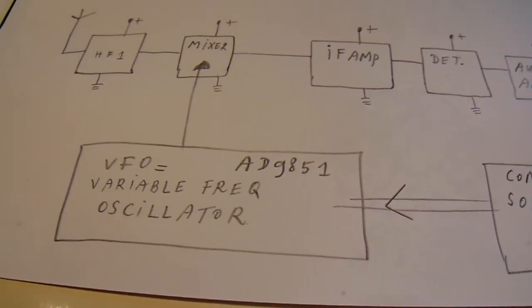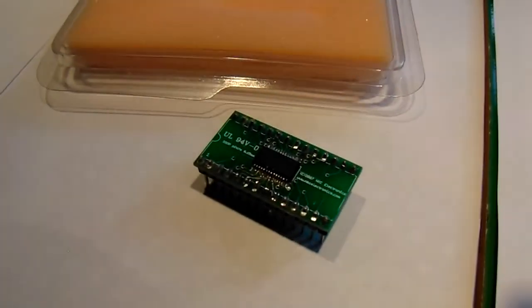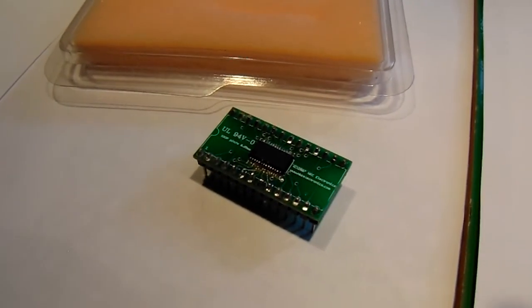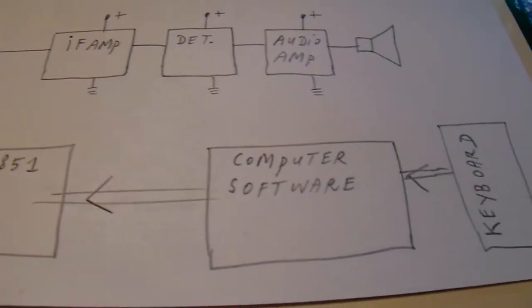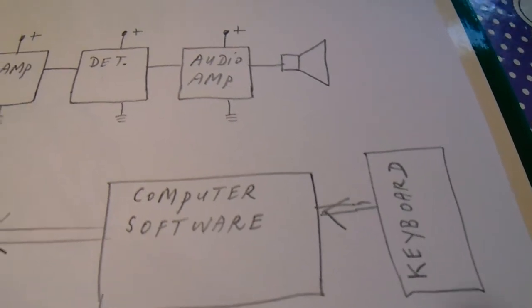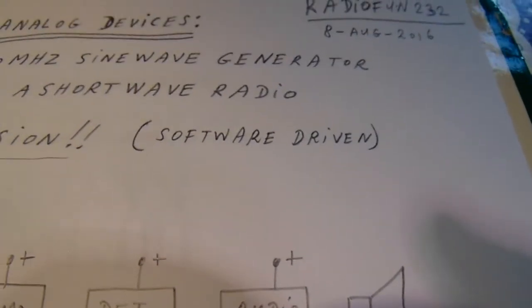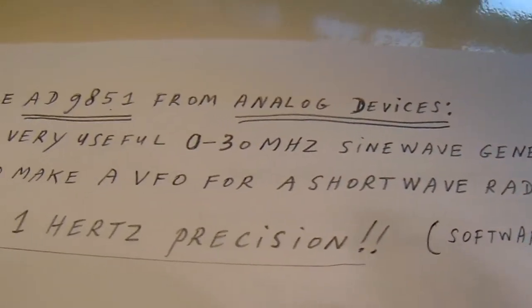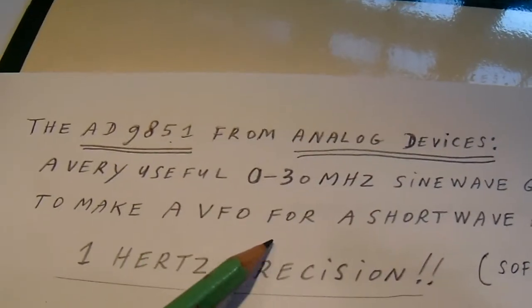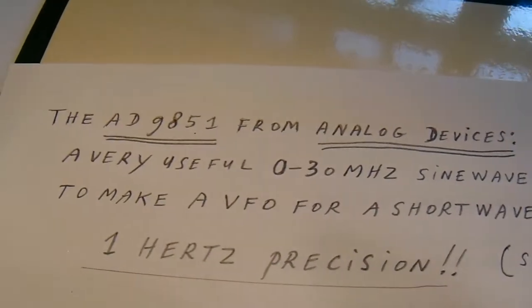So for everyone interested in this chip and in making a radio with the help of a computer, this is in my opinion an ideal option to receive radio stations between 0 and 30 megahertz.